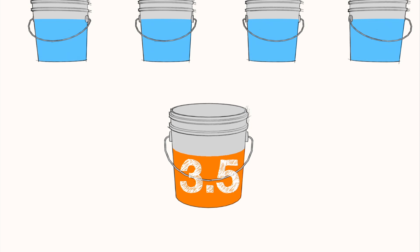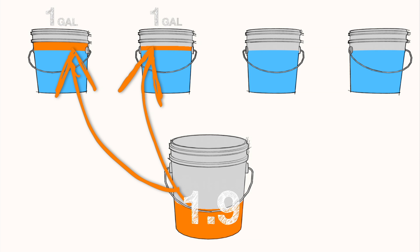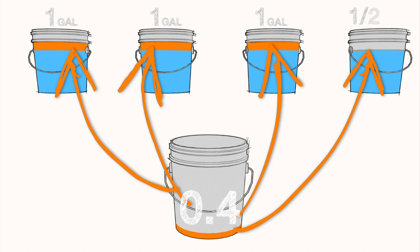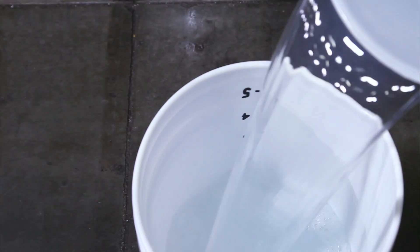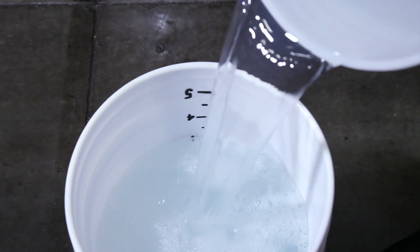Since we need one five gallon bucket for each gallon of concentrate, we will distribute the 3.5 gallons into four buckets: three buckets with one gallon in each and the fourth bucket gets the half gallon. We use deionized water again to keep water hardness in check, and always remember that you must start with the water first and then mix in the concentrate.